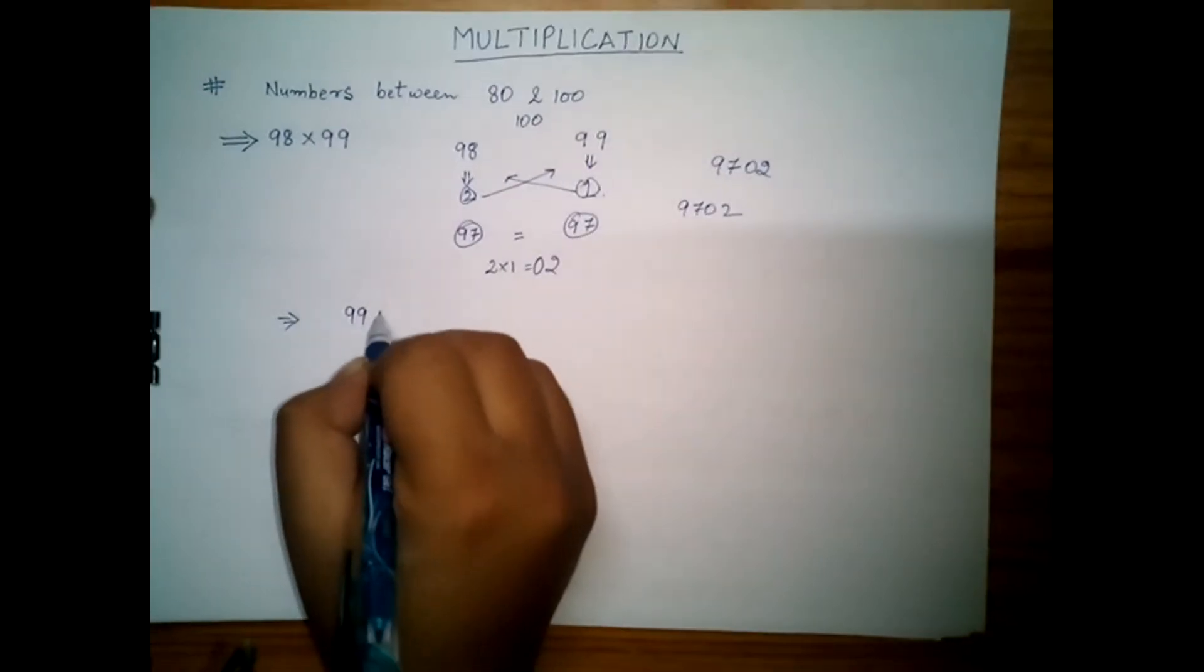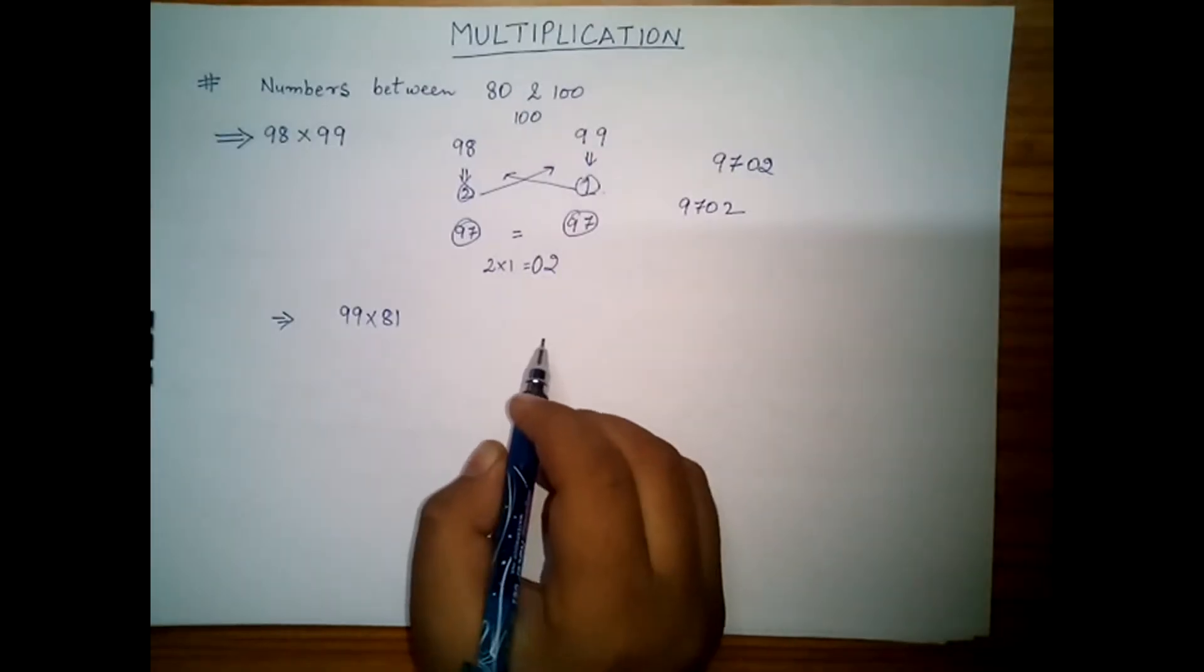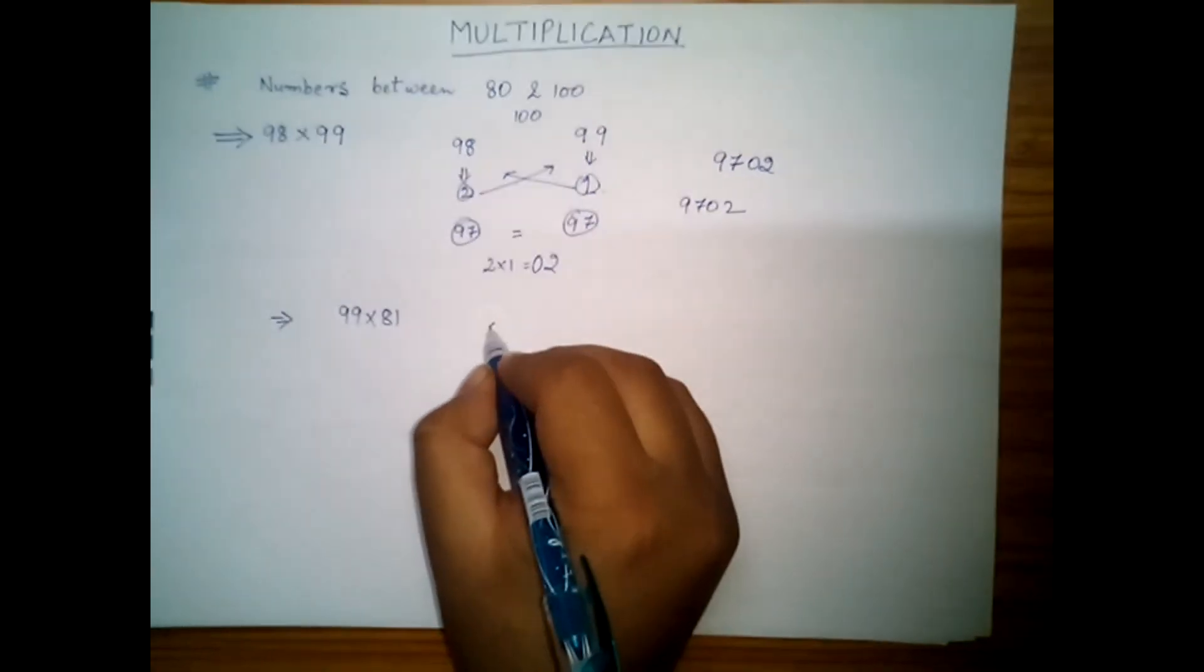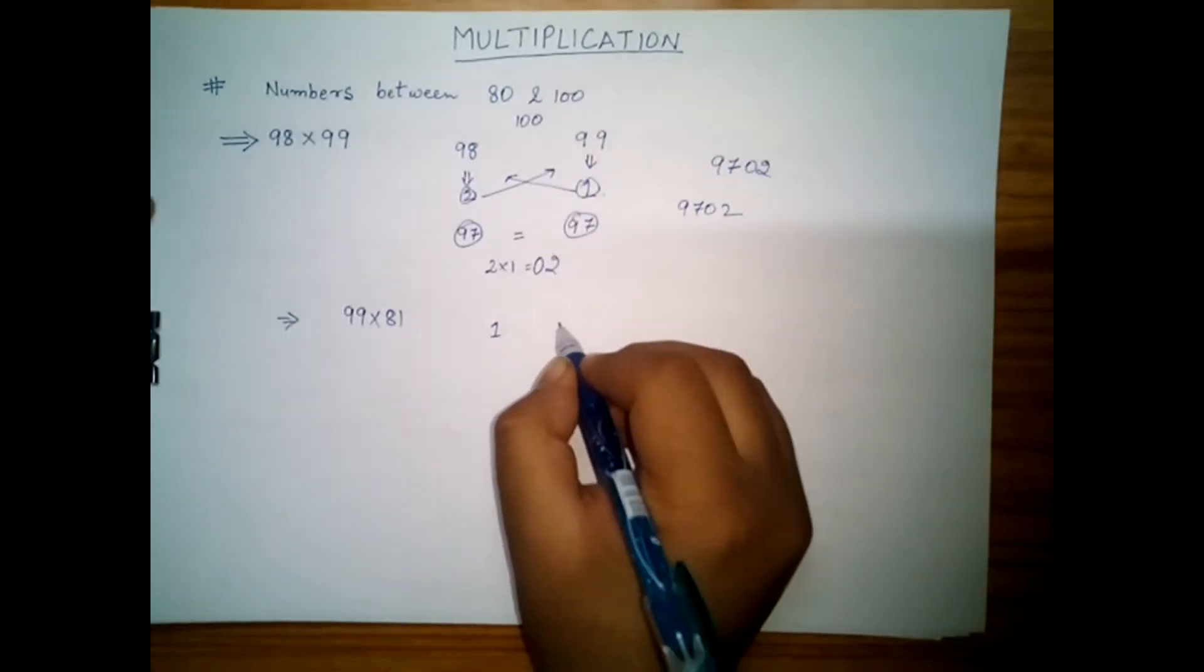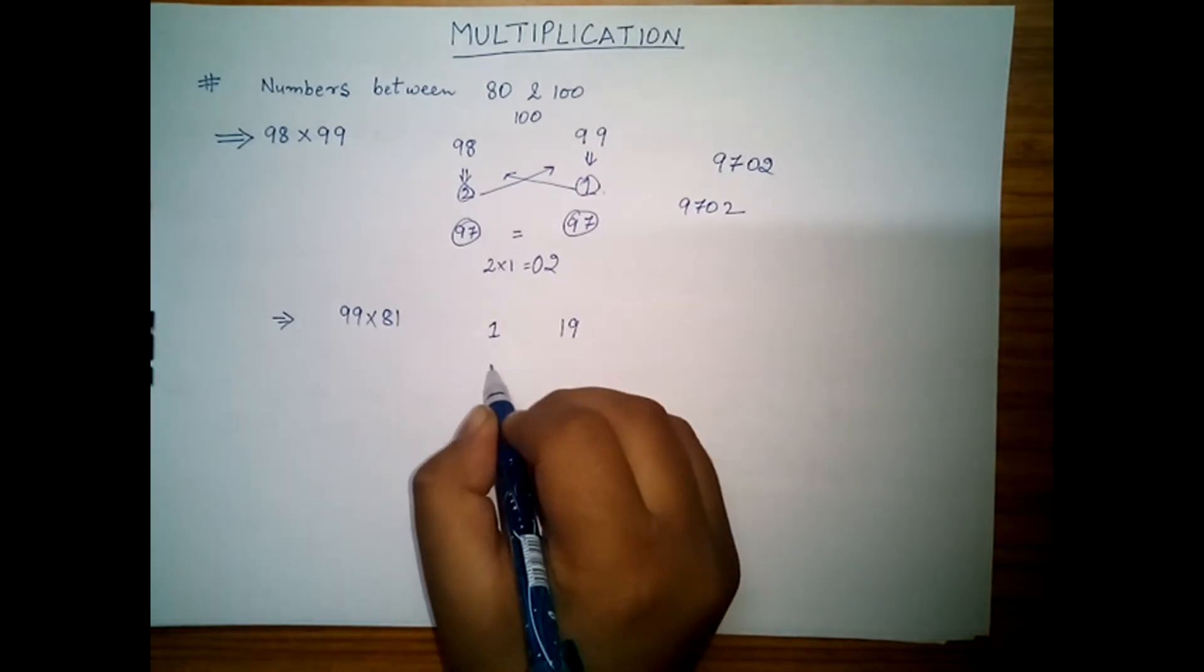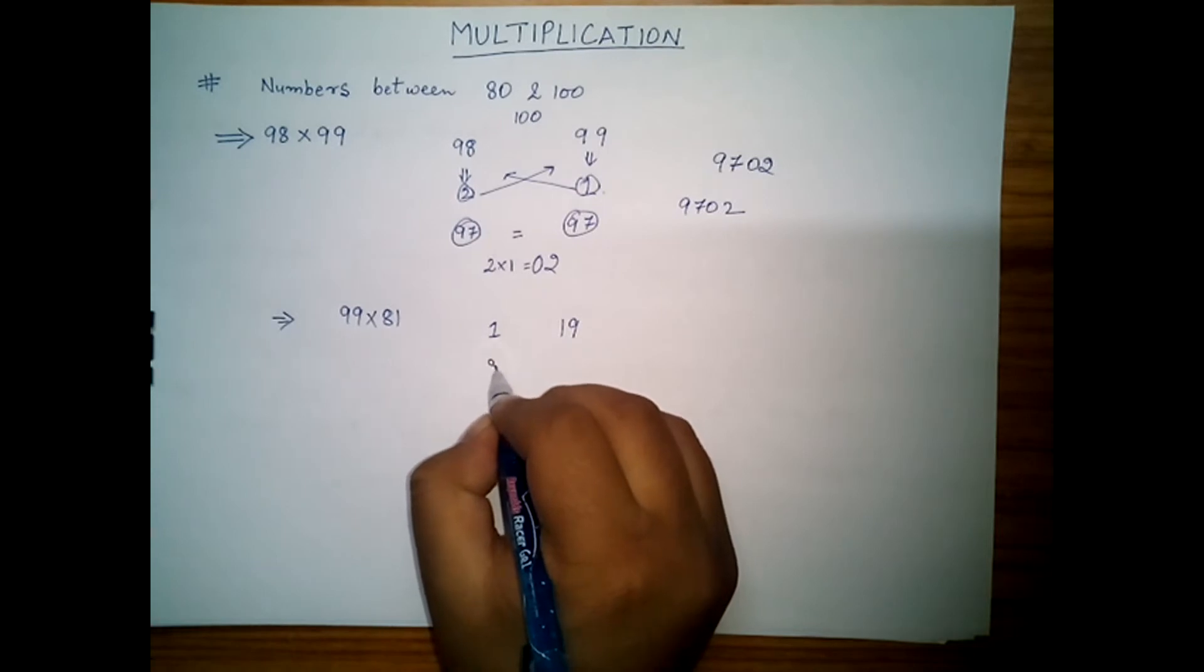Suppose we have 99 into 81. For 99 the difference is 1, and for 81 the difference is 19. So 99 minus 19 is 80, and 81 minus 1 is 80.